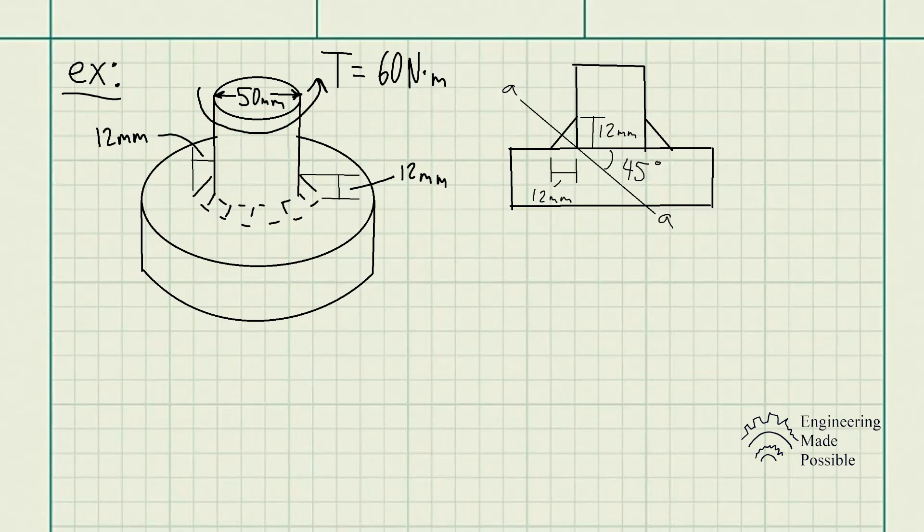In this example, we have steel shafts connected together using a fillet weld as shown. Determine the average shear stress in the weld along section aa if the torque applied to the shaft is 60 newton meters. Note the critical section where the weld fails is along section aa.